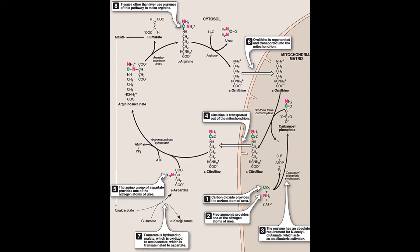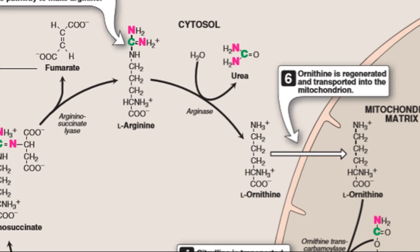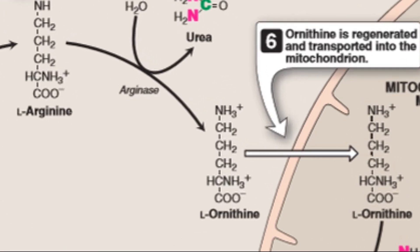Alternatively, the oxaloacetate can be converted to aspartate via transamination and can enter the urea cycle as well. Arginase cleaves arginine to ornithine and urea and occurs almost exclusively in the liver. The other organs lack this enzyme.